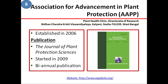The last one in today's video is Association for Advancement in Plant Protection, established in the year 2006. This association is based in Vidhan Chandra Krishi Vishwavidyalaya. They have a publication called The Journal of Plant Protection Sciences, which started in the year 2009 and is a bi-annual publication — two issues in one year.